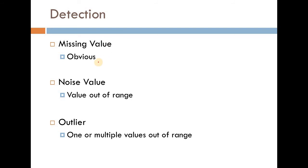The detection of missing values is quite obvious because the cell is empty and we can clearly see that this is a missing value. A noise value can be detected as the one that has got its value out of the range.